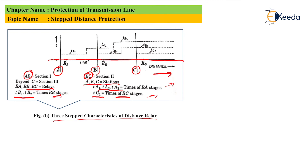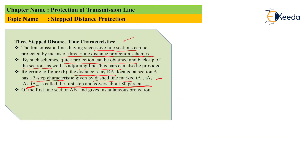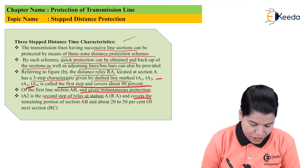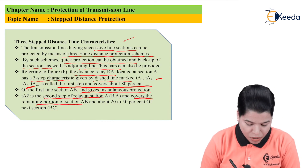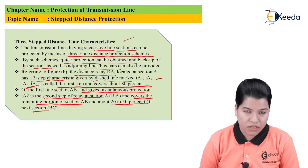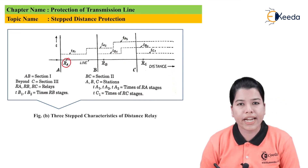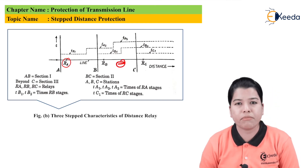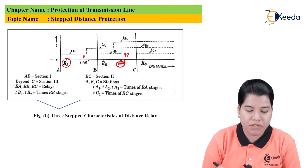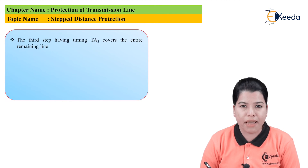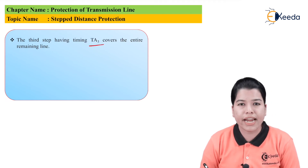For the first section AB, the relay provides instantaneous protection. TA2 is the second step of relay RA and it covers the remaining portion of section AB and about 20% to 50% of section BC. Relay RA protects only 80% of the line, and the remaining portion is protected in the B section. In this way, there is one step for the first section, two steps into the second, and three steps total, so the complete section of the line is protected. The third step has a timing of TA3 and covers the entire remaining line.